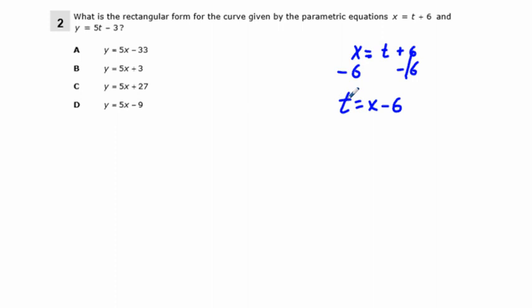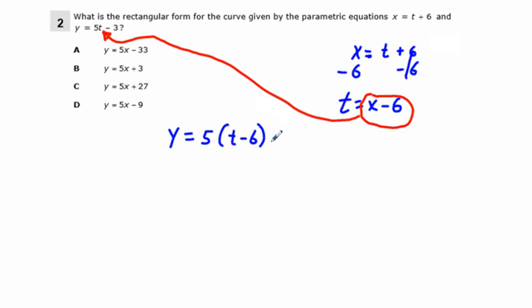And so if we just go ahead and take this x minus 6 and plug it in for this t right here, that should give us a correct answer. So put in y equals 5 times t minus 6, replacing the t, minus 3.